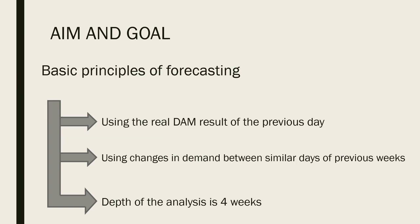There are three basic principles for forecasting. First, using the real data results of the previous day. When using the last possible results, we receive the most accurate results of forecasting. Second, using changes in demand between similar days of previous weeks. As an example, if we are forecasting demand for Friday, we analyze previous periods Thursday to Friday, how our demand changed from Thursday to Friday in previous weeks. Depth of the analysis is four weeks. Considering that the forecasting is short term, we do not require the depth of analysis to be too deep into years.